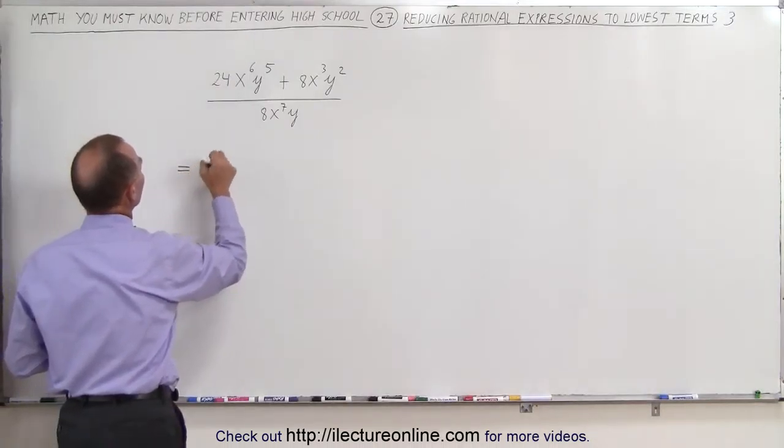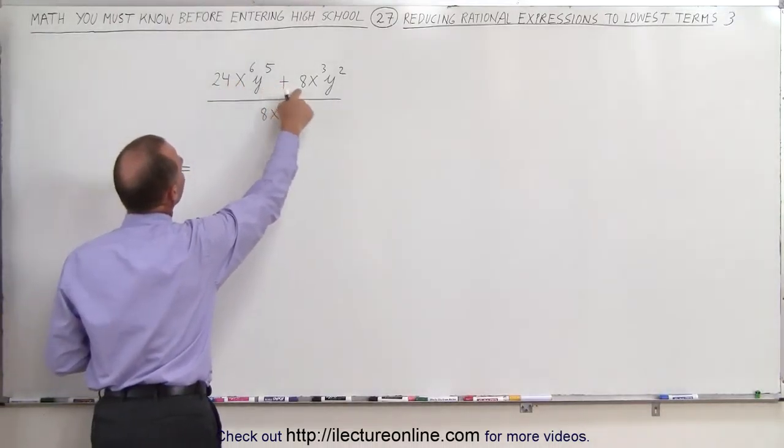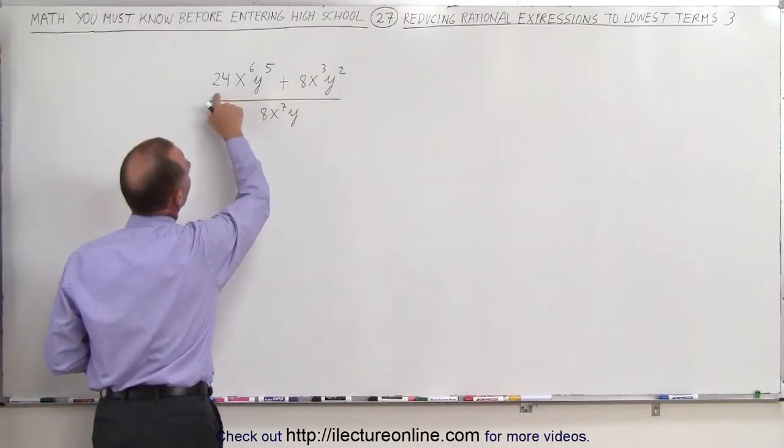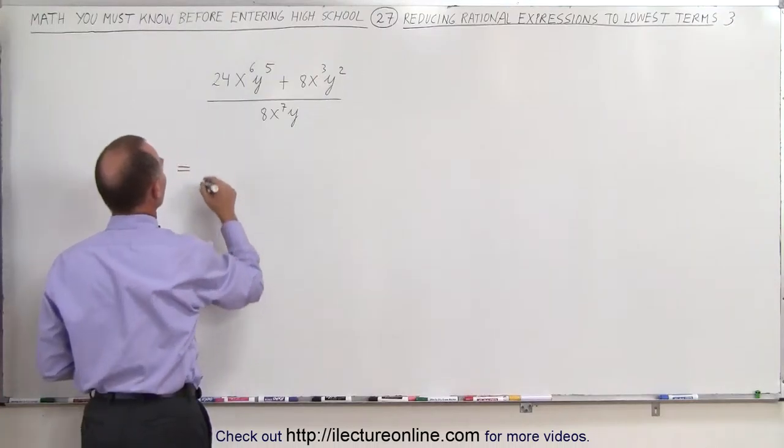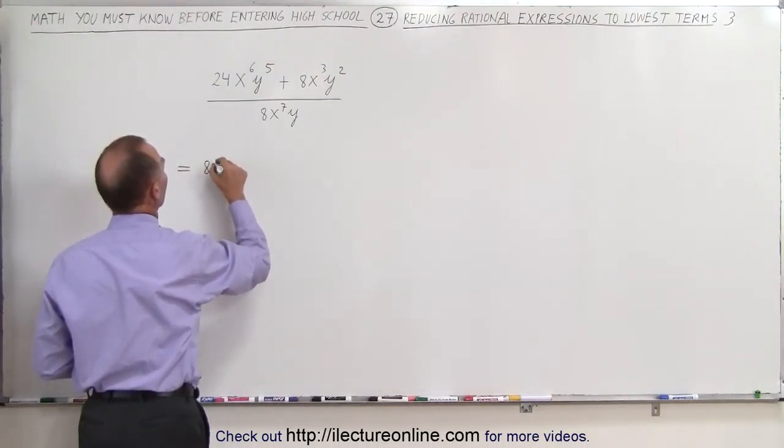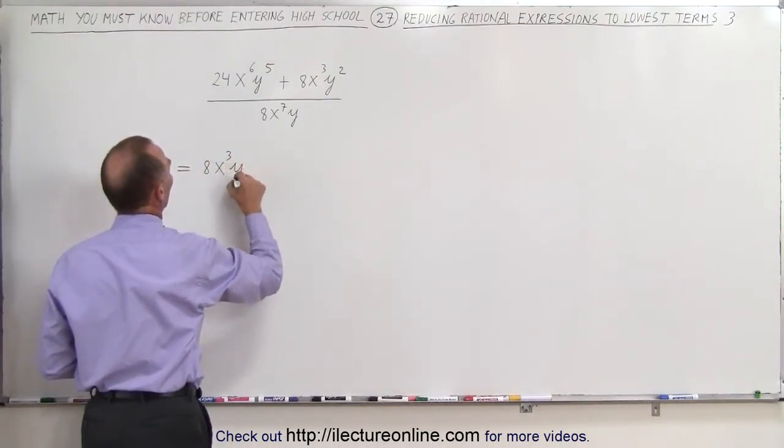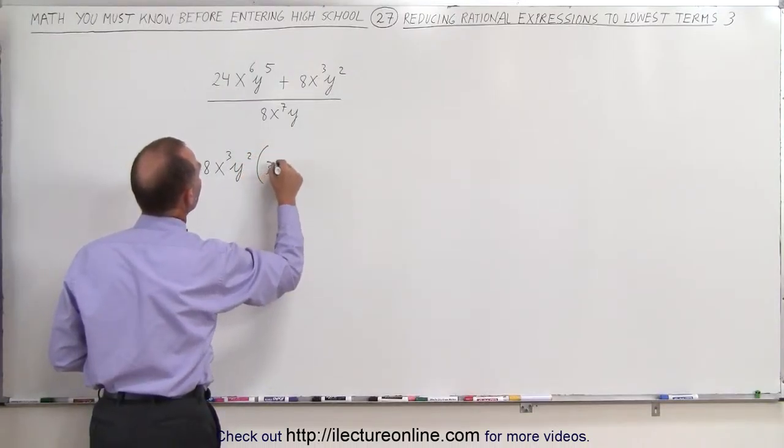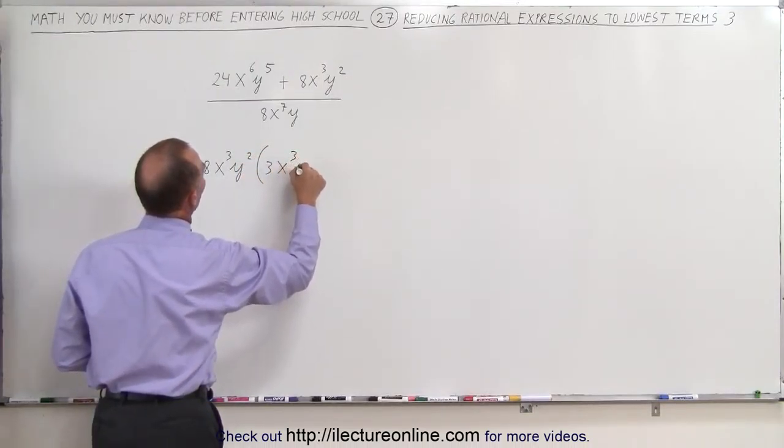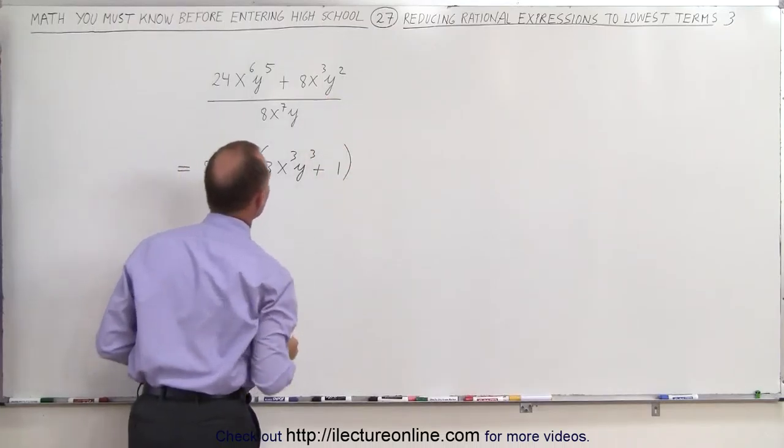So in the numerator we can see that between the 24 and the 8, that 8 is a common factor, x cubed is a common factor, and y squared is a common factor, which means we can factor out an 8, an x cubed, and a y squared, which leaves us in the numerator with 3x cubed y cubed plus, well, I factor out an 8, an x cubed, and a y squared, that means plus 1 in the numerator.